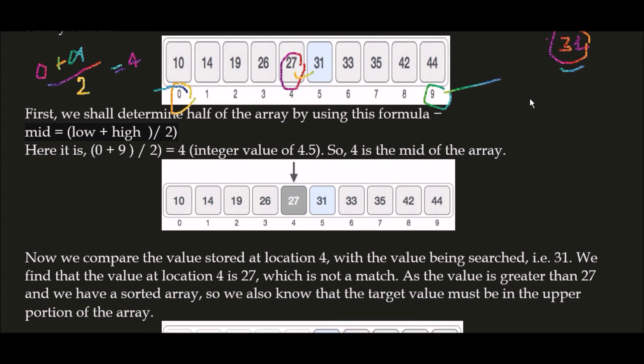9 plus 0 divided by 2 leads to 4.5, but here we consider only the floor value, which means 4. What is the value of location 4 in this array? It's 27. So your mid value is 27. Now we compare: is 27 equal to 31? No. Now we check greater than or less than. 27 is less than our target value, which is 31.